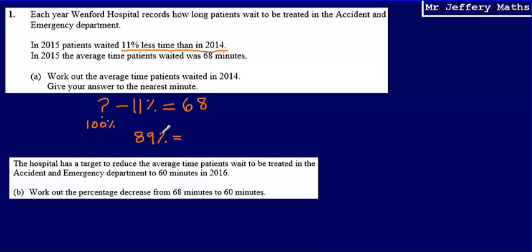So if we now know that 89% is equal to 68, then all that we need to do is work out what the 100% was, and that will tell us our time in 2014.